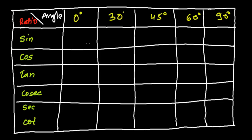Simply start writing 0, 1, 2, 3, 4 in each box. So 0 here for 0°, 1 for 30°, 2 for 45°, 3 for 60°, and 4 for 90°. Then divide everything by 4.